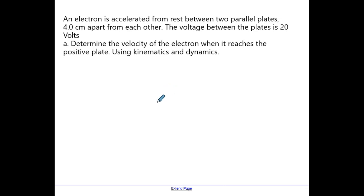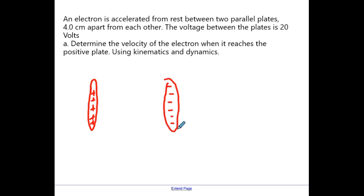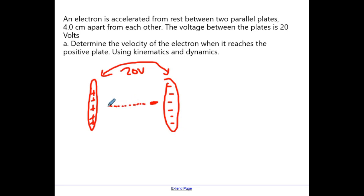In this next question set we're going to try to calculate the velocity of an electron using kinematics and dynamics. We have some parallel plates — positive on one side, negative on the other — and we're going to accelerate an electron from rest. The electron better be starting at the negative plate, because if you put the electron by the positive plate it wouldn't want to move. We know the voltage between them is 20 volts, and the electron is going to want to accelerate toward the positive plate. We want to find the final velocity when it arrives.